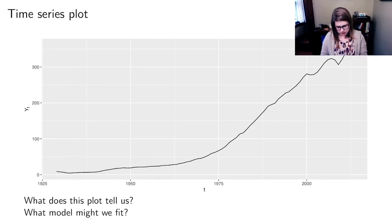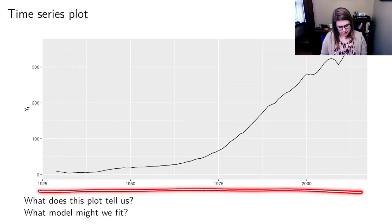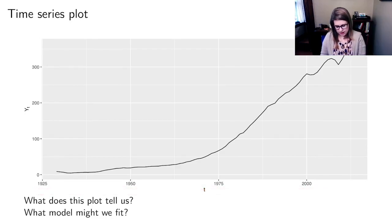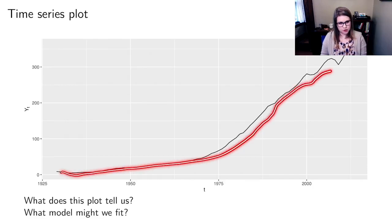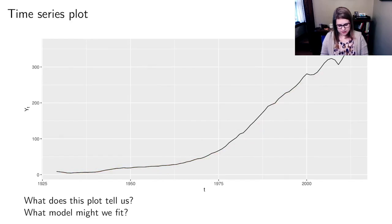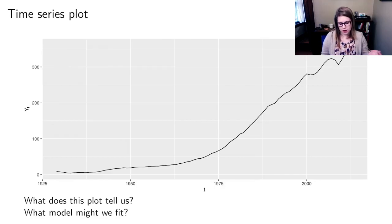Let's start by looking at a time series plot of the clothing expenditures data. This plot shows time on the x-axis and expenditures on the y-axis — we could think of that as t and y-sub-t. Looking at this plot, it looks like clothing expenditures are trending upward. The model most relevant from our existing tools is linear regression — maybe we could fit a straight line through this data.